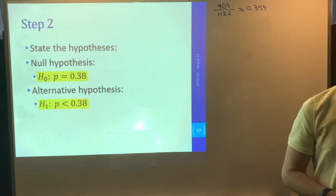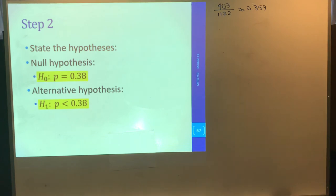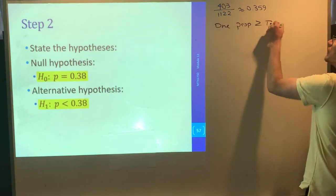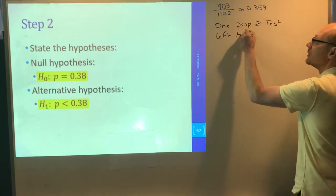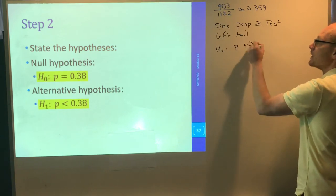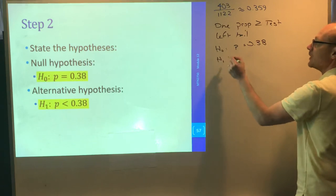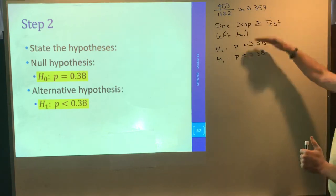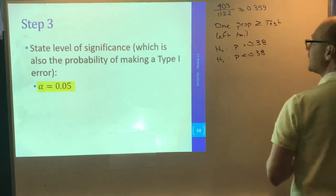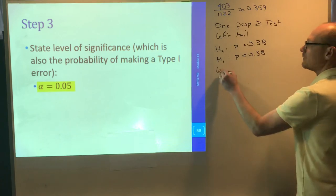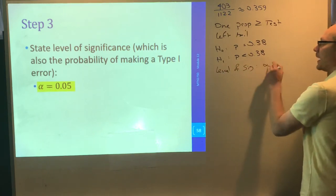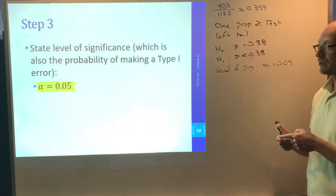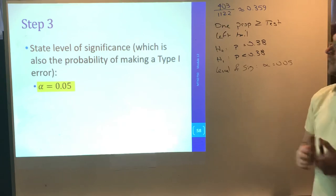So we're going to state the hypotheses. The null hypothesis is a statement of equality. The proportion equals 0.38. And our alternative hypothesis is that the proportion is now lower than 0.38. We have a 1 prop Z test. It is left tail. The null hypothesis says the proportion is 0.38. The alternative hypothesis says it's less than 0.38. We need to very clearly and carefully make note of our alpha, our level of significance. Alpha equals 0.05.